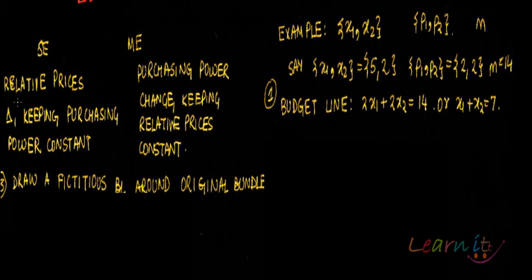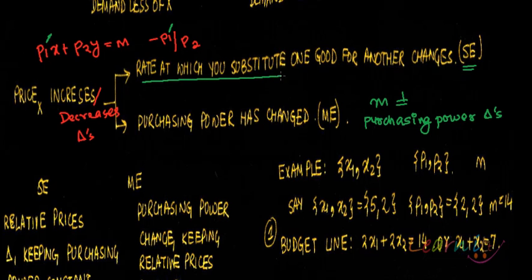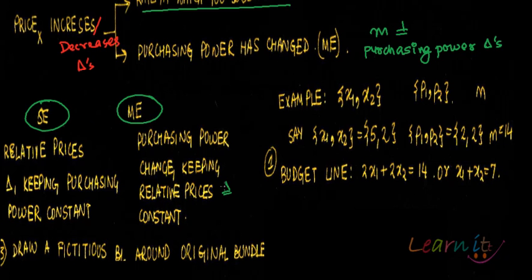The substitution effect is where you try to keep purchasing power constant while relative prices change — you adjust nominal income to keep purchasing power constant. Whatever change in demand is happening just due to changes in these relative prices, that is the substitution effect. The income effect is where you change the purchasing power while keeping relative prices constant.